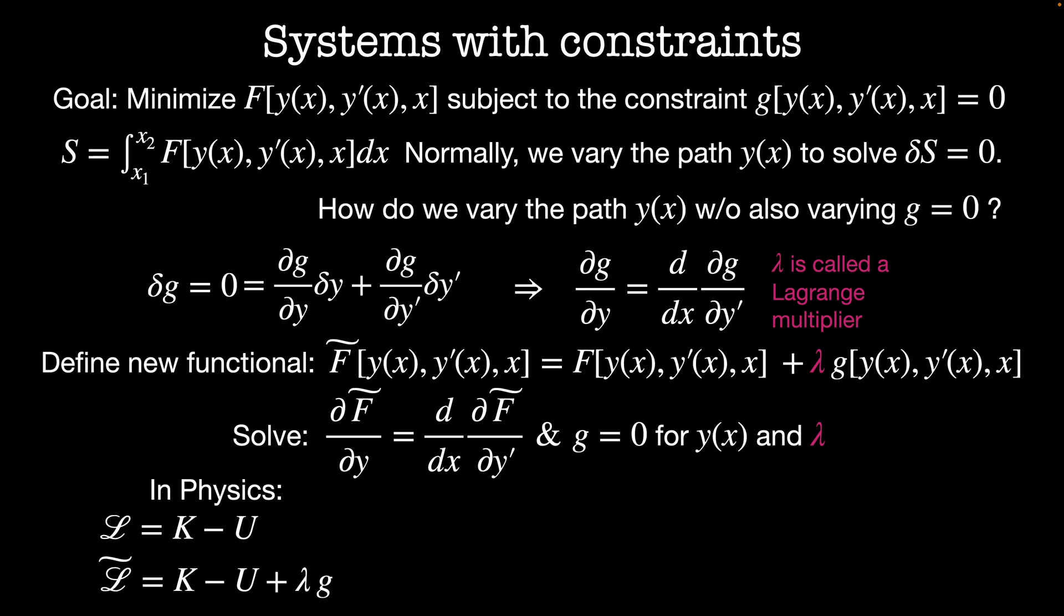For dynamics problems, our Lagrangian is the kinetic energy minus the potential energy, but we could have a constraint like the rope connecting the two masses in the previous example. Then we write the statement of that constraint as a functional which equals zero and multiply that by the Lagrange multiplier lambda. We can use this new statement to look at a generalized force, dL tilde by dr, which equals minus dU by dr, which is the force coming from the potential energy, plus lambda times dg by dr. And this is the force necessary to enforce the constraint.